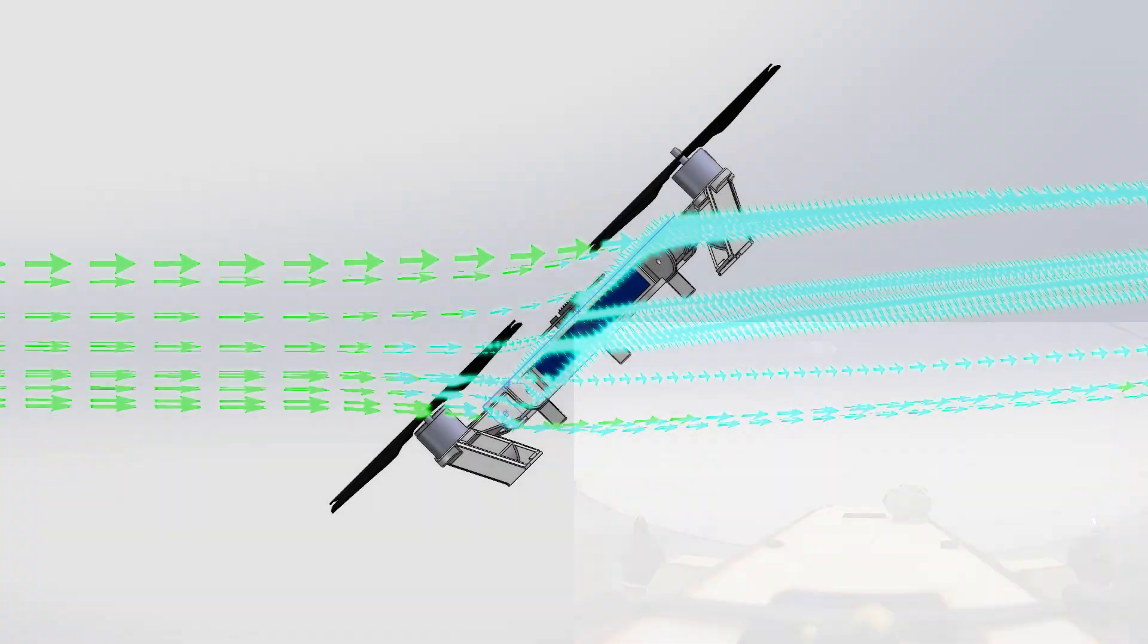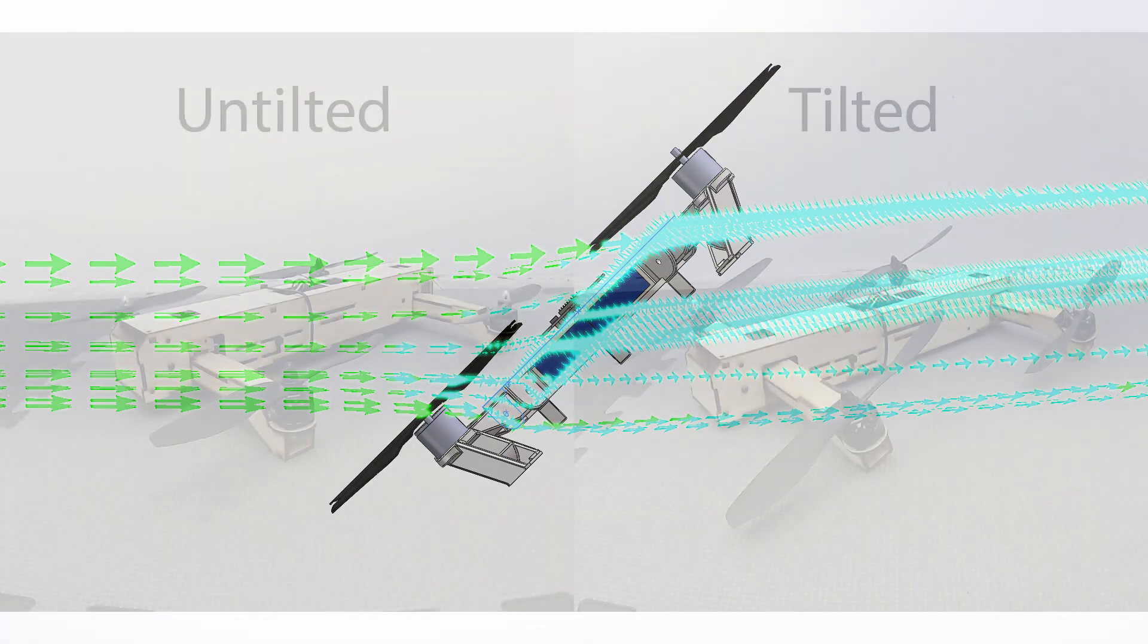The design for this vehicle is inspired by the fact that traditional quadcopters must tilt their central body at a large angle when traveling at high speed. This creates a large drag area that limits the top speed, agility, and efficiency of the vehicle.